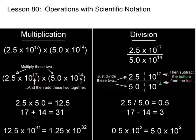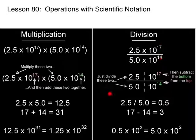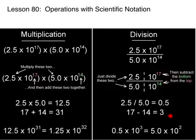In division, we're going to divide the two coefficients and we're going to subtract the bottom exponent from the top exponent. What we're doing really is adding positive and negatives when we do this. So we're going to divide 2.5 divided by 5 and we get 0.5. And then 17 minus 14 is 3.